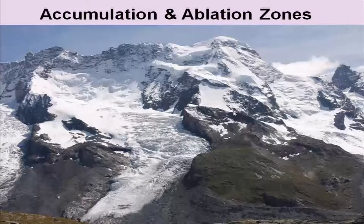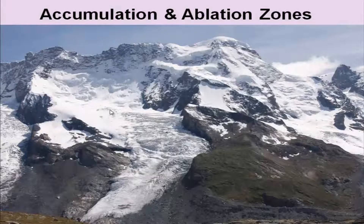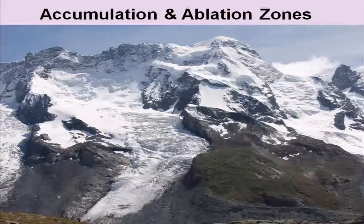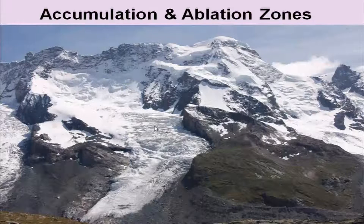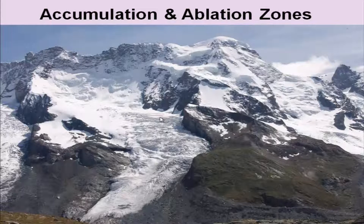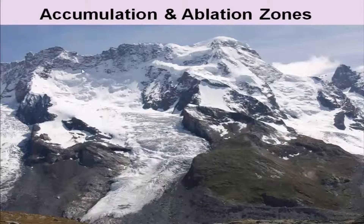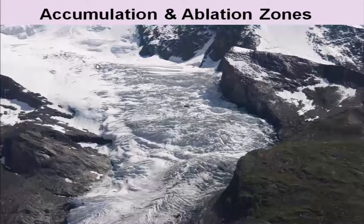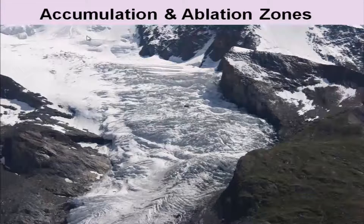This is what has been shown here. If you see this photograph, it shows the accumulation zone here, and this line is the firn line. Below this you will have the loss — whatever loss takes place in terms of losing the ice or the glaciers. Melting of glaciers will take place in this region, whereas mostly this area will remain stable. This marks the firn line; this is the ablation zone and this is the accumulation zone.